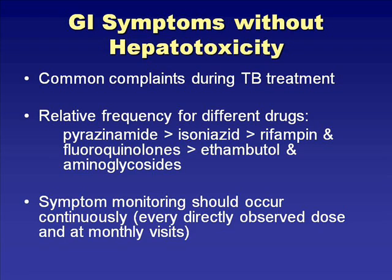GI symptoms without hepatotoxicity are very common during TB treatment. Pyrazinamide causes the most GI symptoms, followed by isoniazid. Rifampin and fluoroquinolones cause GI symptoms at about the same rate. Ethambutol and aminoglycosides very uncommonly cause GI symptoms.